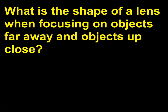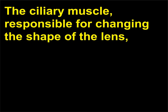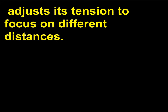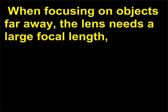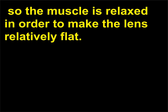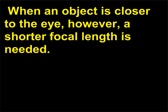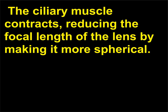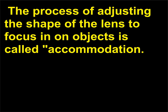What is the shape of a lens when focusing on objects far away and objects up close? The ciliary muscle, responsible for changing the shape of the lens, adjusts its tension to focus on different distances. When focusing on objects far away, the lens needs a large focal length, so the muscle is relaxed in order to make the lens relatively flat. When an object is closer to the eye, a shorter focal length is needed; the ciliary muscle contracts, reducing the focal length of the lens by making it more spherical. The process of adjusting the shape of the lens to focus on objects is called accommodation.